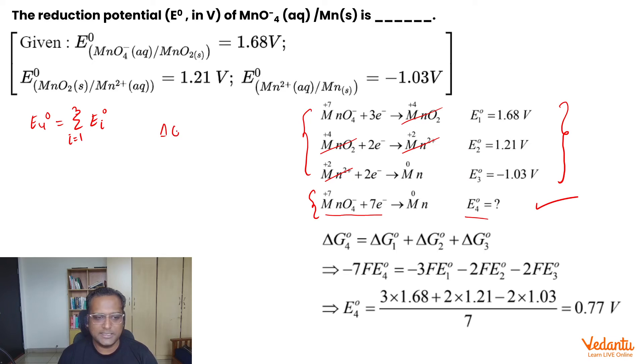We know that delta G° can be written as minus NFE°, where N is the number of electrons transferred. So, target reaction is 7 electrons, then 3, then 2, then 2, but please mind you, there's a minus sign here.